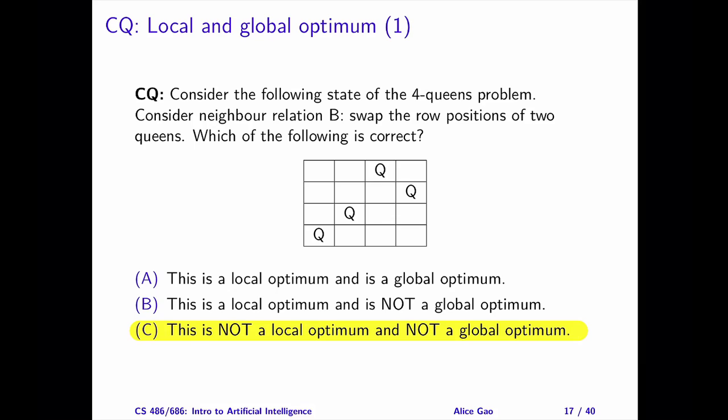This state is not a global optimum since there are two pairs of queens attacking each other. Now, is this state a local optimum or not?